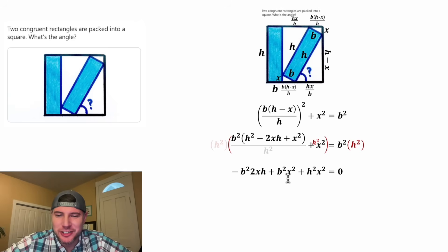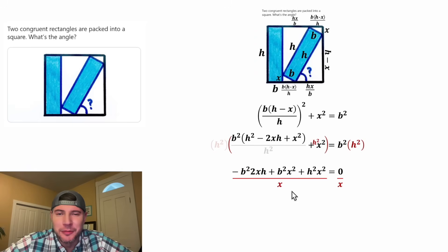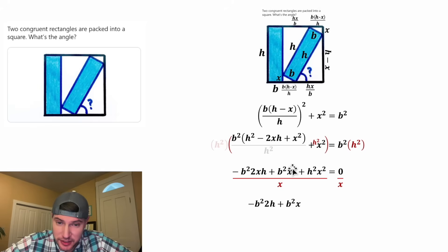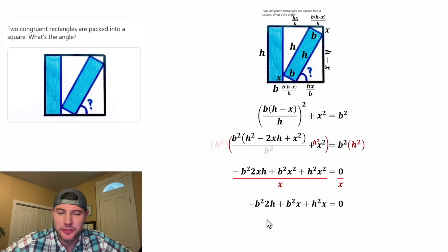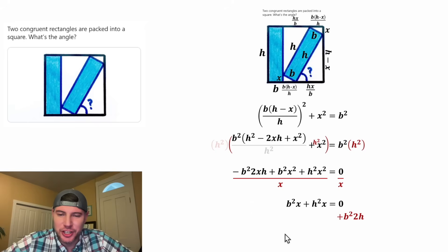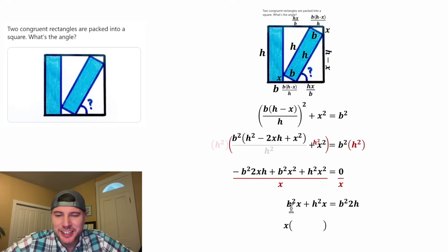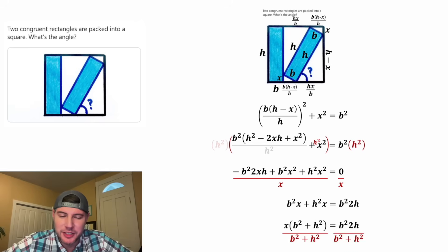After dividing by X, the first term is negative 2B²H, the second term is B²X, and the third is H²X, all equal to zero. To solve for X, let's get all the X terms on one side. Add 2B²H to both sides, then factor out X from the remaining terms: X(B² + H²) = 2B²H. Dividing both sides by B² + H² gives us X equals 2B²H over B² plus H².